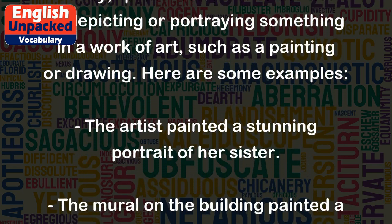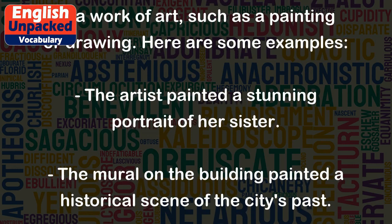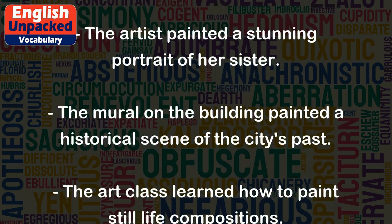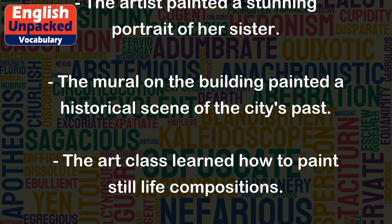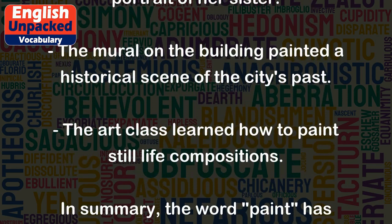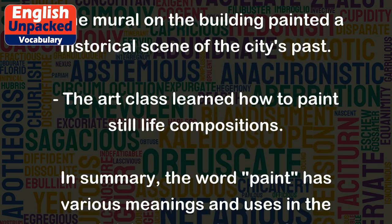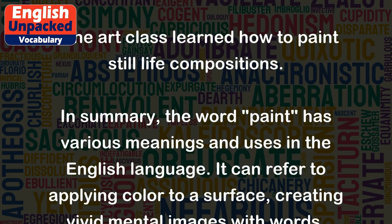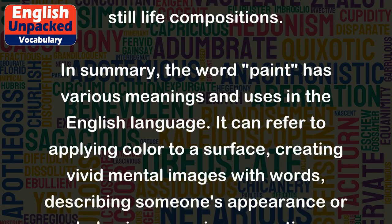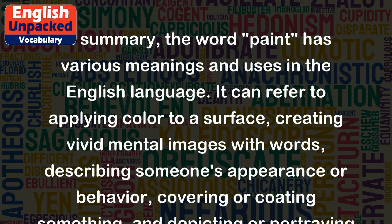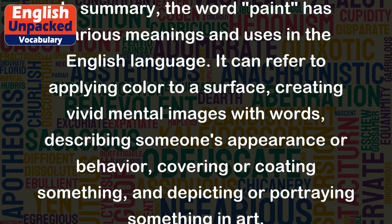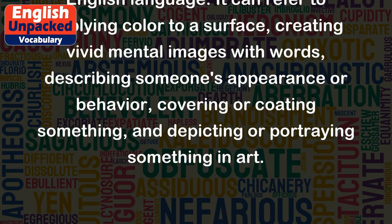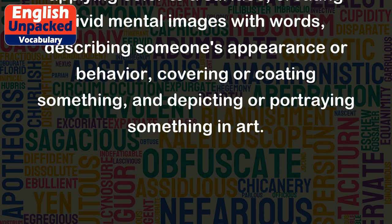The artist painted a stunning portrait of her sister. The mural on the building painted a historical scene of the city's past. The art class learned how to paint still life compositions. In summary, the word paint has various meanings and uses in the English language. It can refer to applying color to a surface, creating vivid mental images with words, describing someone's appearance or behavior, covering or coating something, and depicting or portraying something in art.